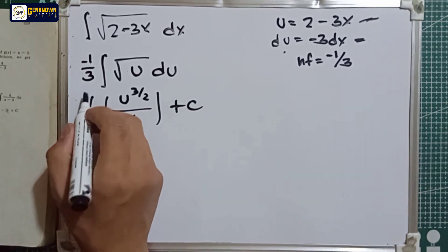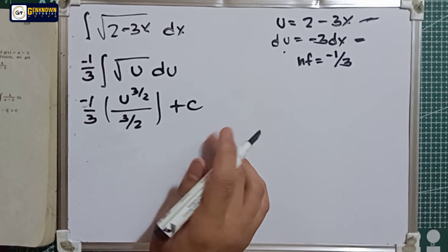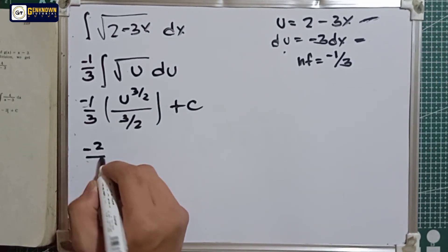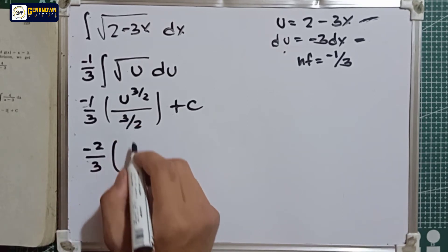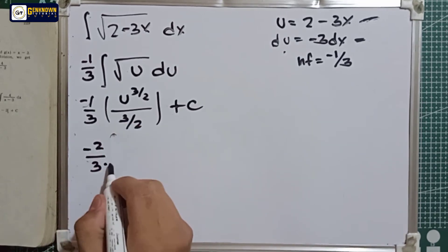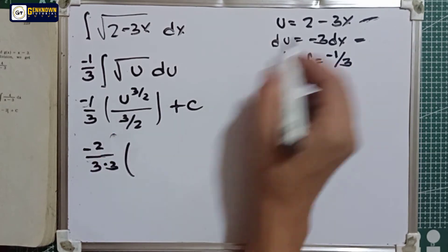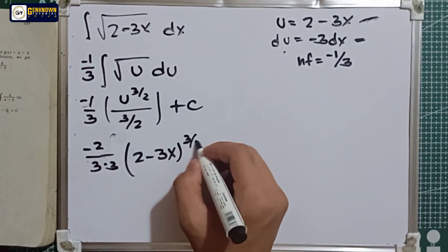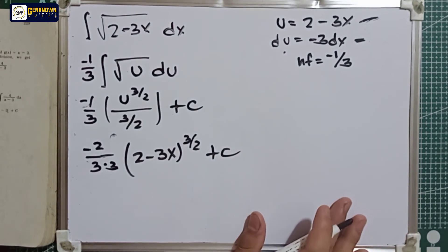Then substitute the value of u from this, so negative 2 over 3 multiply by 3, and u is equal to 2 minus 3x raised to 3 over 2 plus the constant.